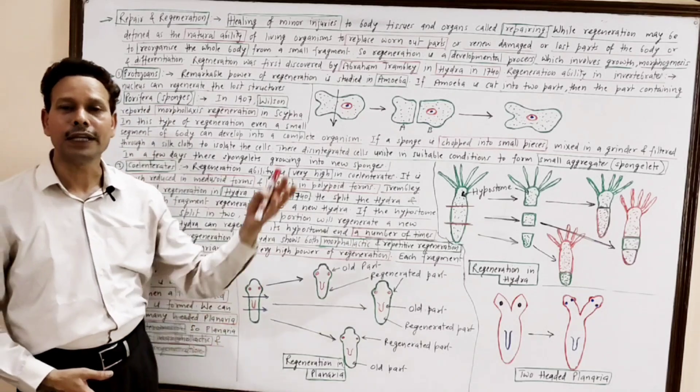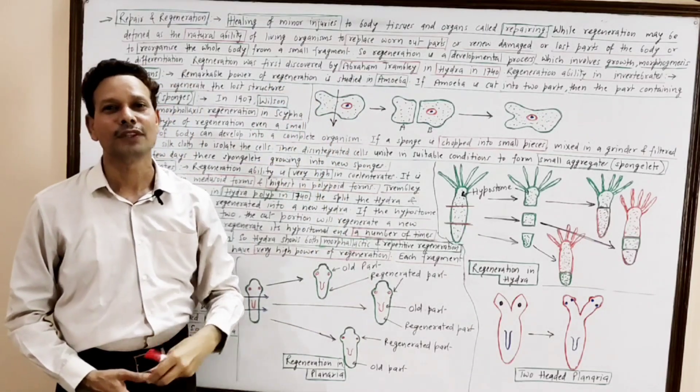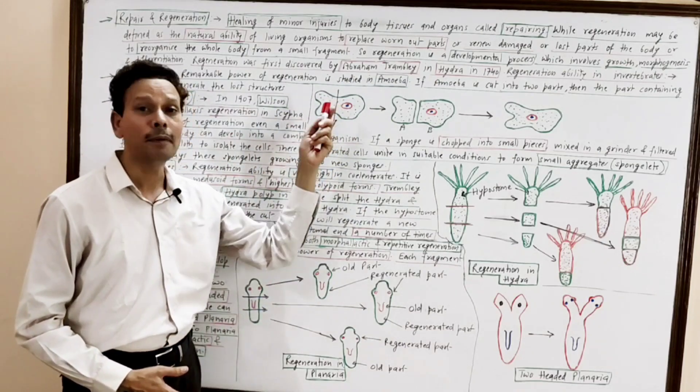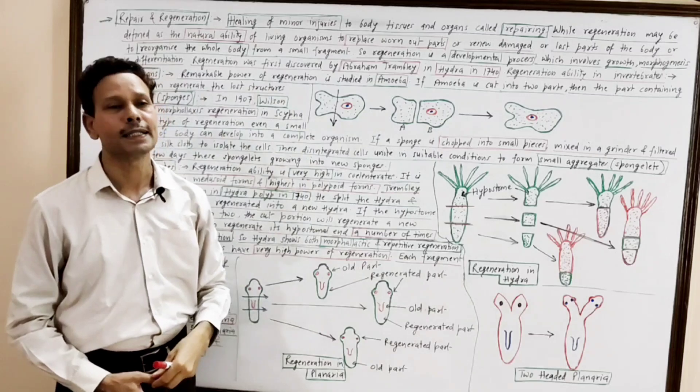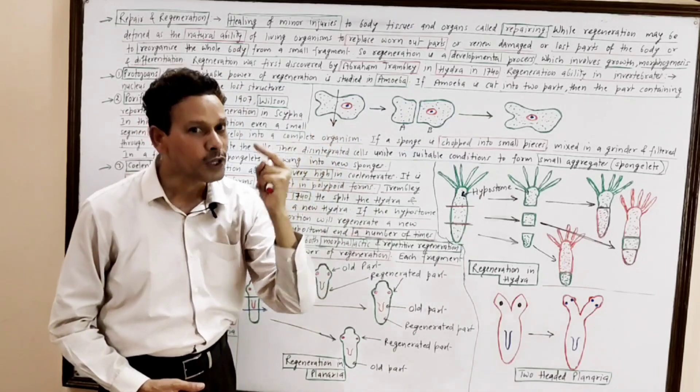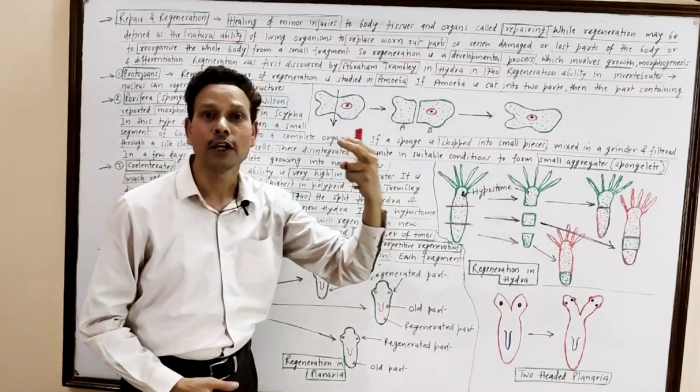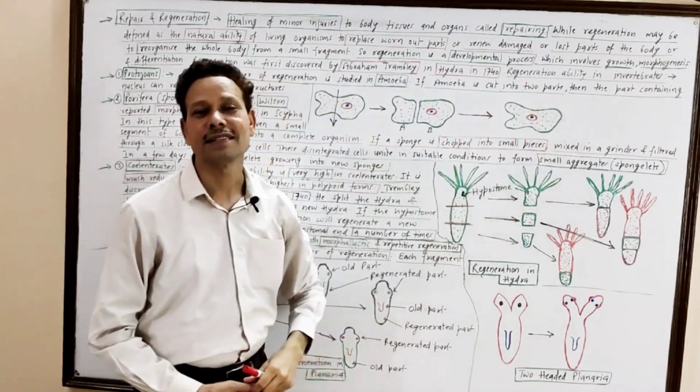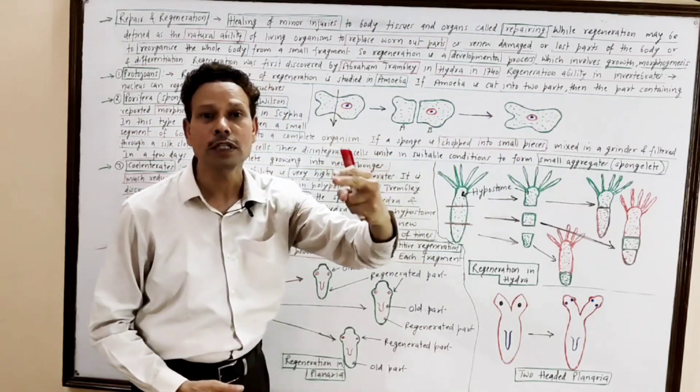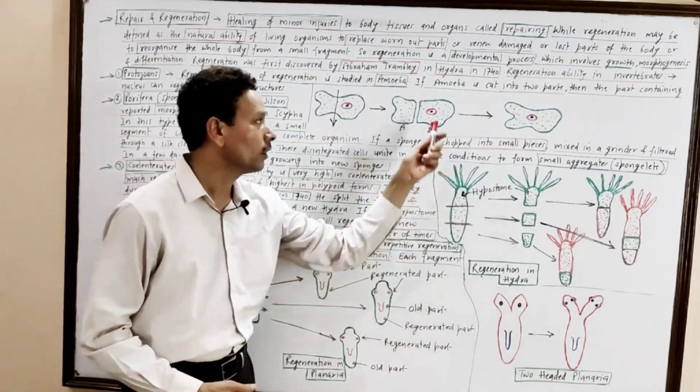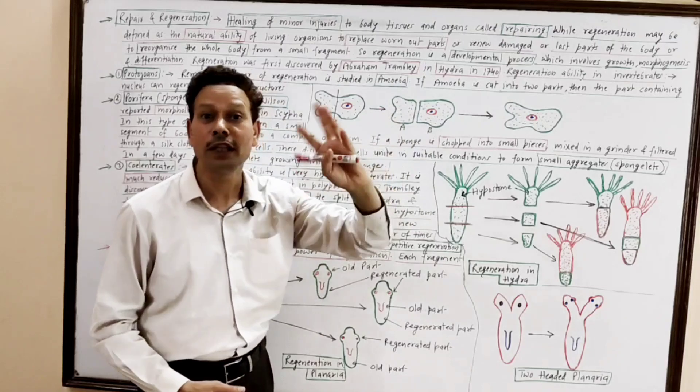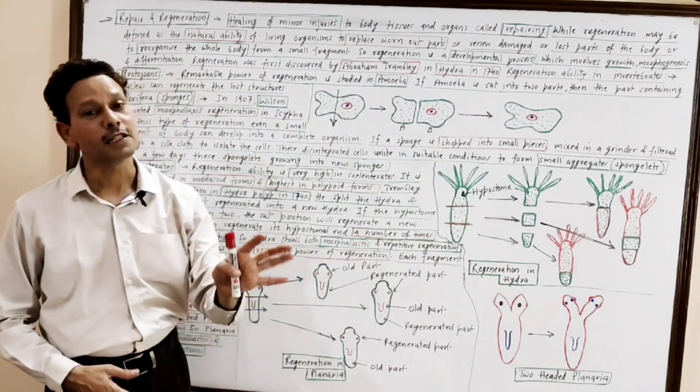Protosomes. These organisms, protosomes like amoeba, they show a remarkable power of regeneration. This is a diagram of amoeba. If amoeba is cut into two parts, this A part without a nucleus and this B part having a nucleus, it is observed that this B part having a nucleus, it reorganizes a new amoeba. It means the formation of new amoeba involves nucleus, nucleus having genetic information and the nucleus involves in the differentiation, in the formation of new organism. While this A part without any nucleus, it gets perished.